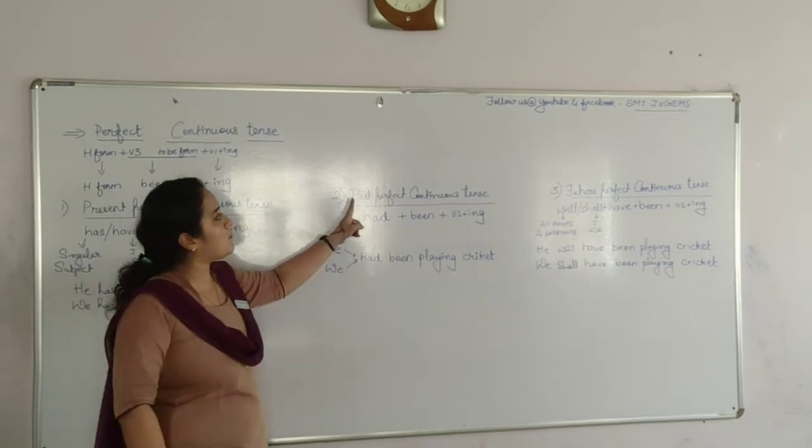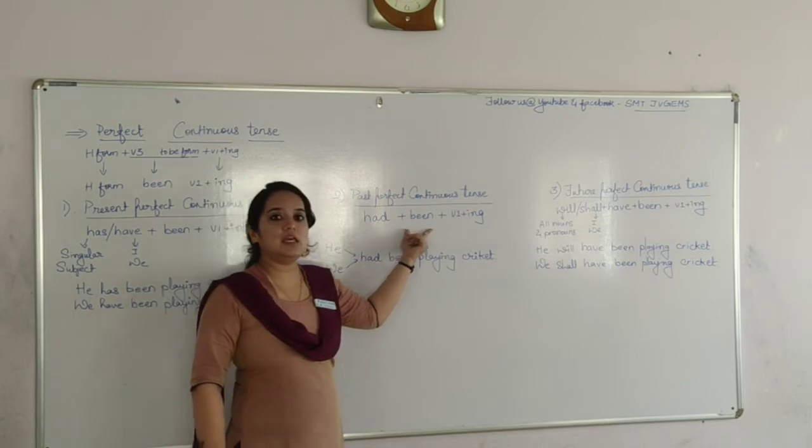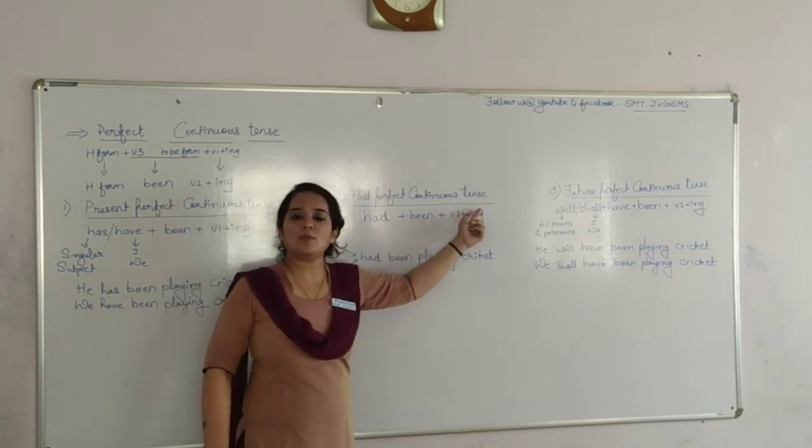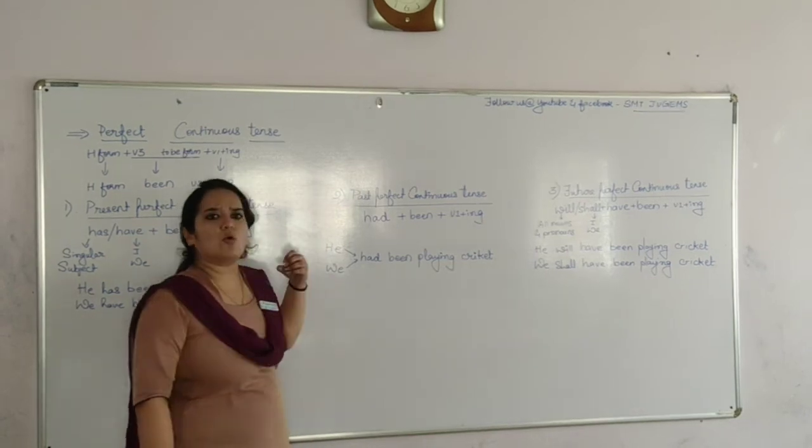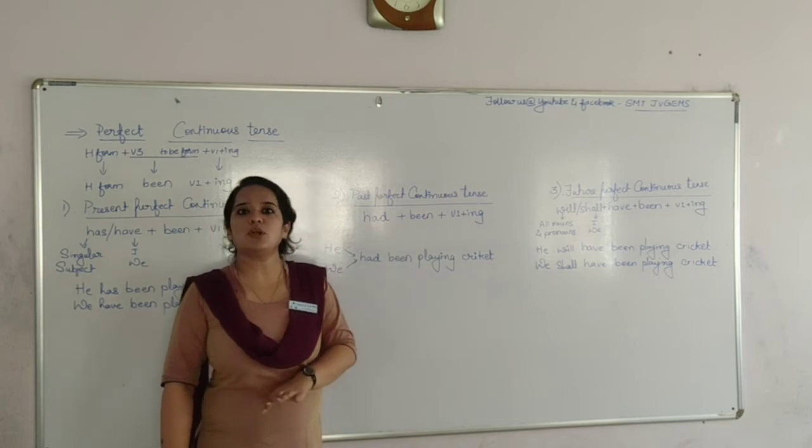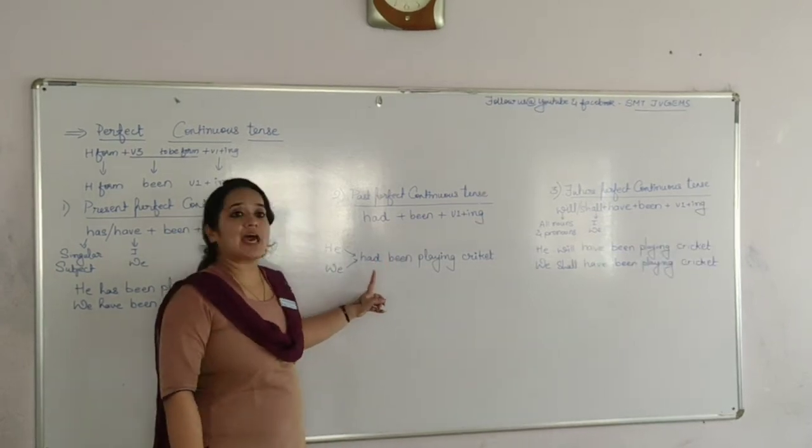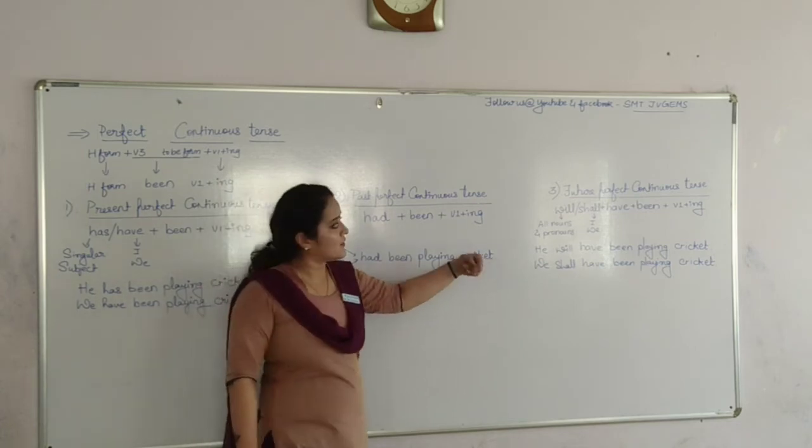Moving on to the past perfect continuous tense. The structure will be had been plus V1 plus ING. So, he or we, whatever the subject is, whether it is a singular one or a plural one, we have to use had with it. Had been playing cricket.